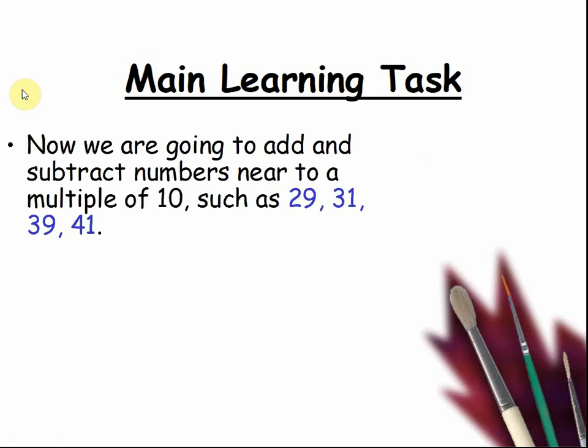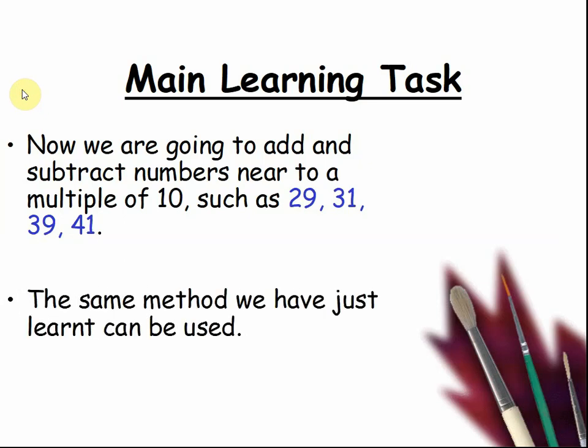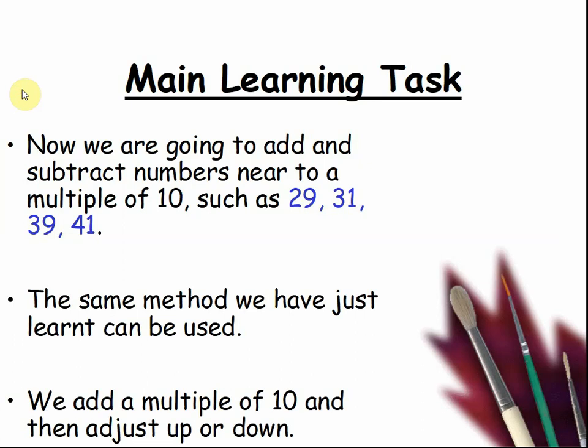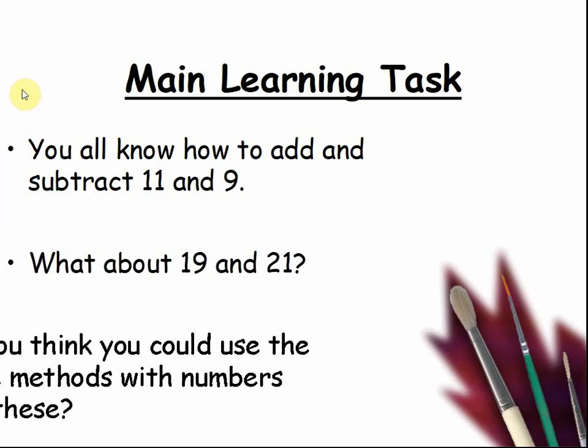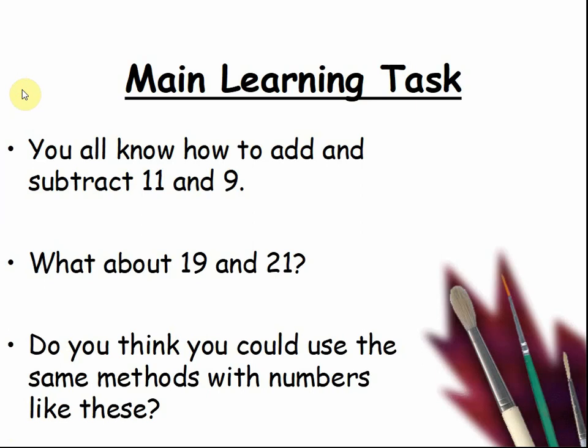Now we are going to add and subtract numbers near to a multiple of 10 such as 29, 31, 39 and 41. The same method we have just learnt can be used. We add a multiple of 10 and then adjust up or down. You all know how to add and subtract 11 and 9. What about 19 and 21? Do you think you could use the same methods with numbers like these? Pause the video and talk to your teacher about it.